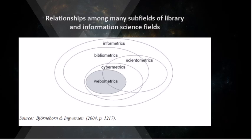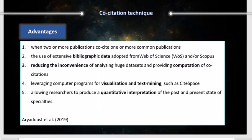Other fields that overlap with Scientometrics are represented in this useful diagram. You see Scientometrics overlaps with Webmetrics, Cybermetrics, Bibliometrics as stated, and Infometrics. For more information, you can refer to this paper if you are interested.